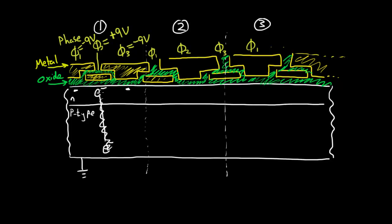You just sit there until we do something with you. Let's start shuttling you out. Let's leave phase one at minus nine volts and phase two at plus five volts. This phase one is equal to this phase one, so both are at minus nine volts. Now let's change phase three to plus nine volts. As an electron, you don't care whether you're under phase two or phase three, because anywhere in that stretch you're very close to the plus nine volts.